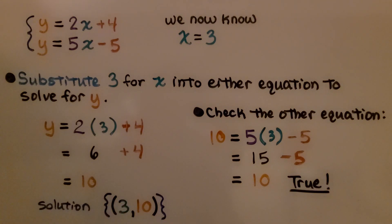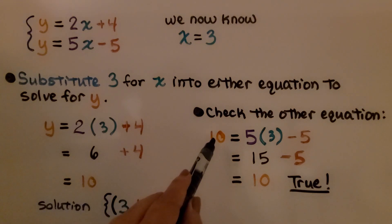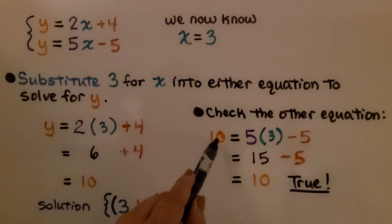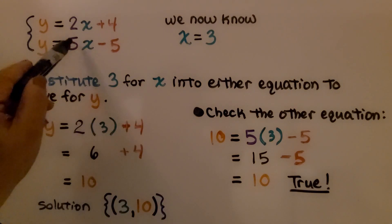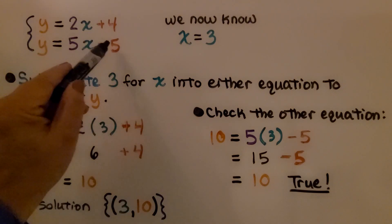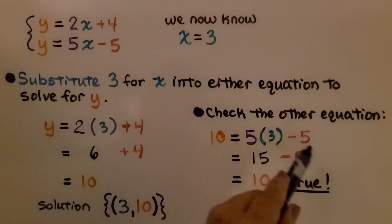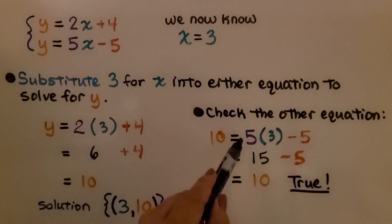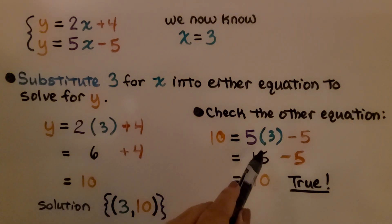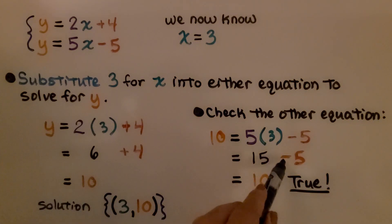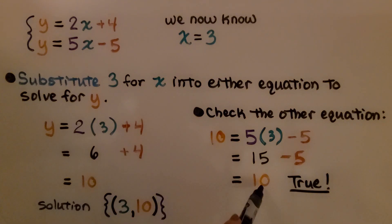Now we can check the other equation. We know y equals 10, so we would have 10 equals 5 times 3 minus 5. That would be 5 times 3 is 15, and 15 minus 5 is 10. 10 equals 10 — that's true.